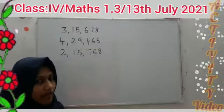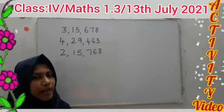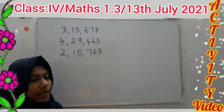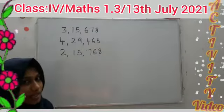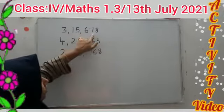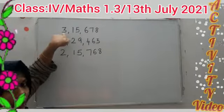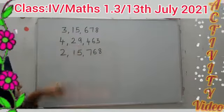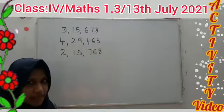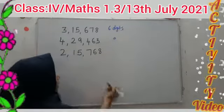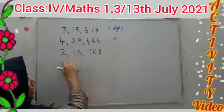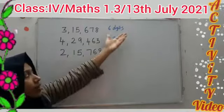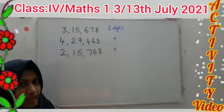Now, my dears, you have three numbers. You have to compare the numbers and find which is the least. First, we count the digits: 1, 2, 3, 4, 5, 6 — 6 digits for each number. All three numbers have 6 digits, so we cannot compare just by counting digits. We should check the place value.